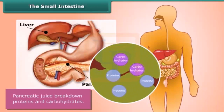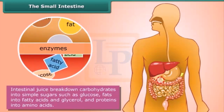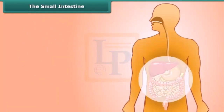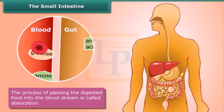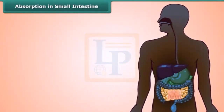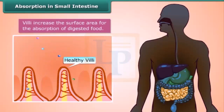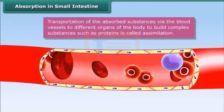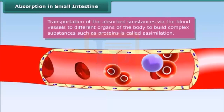Pancreatic juice breaks down proteins and carbohydrates. Partly digested food reaches the small intestine, and intestinal juice breaks down carbohydrates into simple sugars such as glucose, fats into fatty acids and glycerol, and proteins into amino acids — completing the digestion of food. The digested food then passes into the bloodstream — this process is called absorption. There are tiny finger-like structures called villi lining the inside of the small intestine, which increase the surface area for absorption. The absorbed substances are transported via blood vessels to different organs, where they are used to build complex substances such as proteins — this is called assimilation.